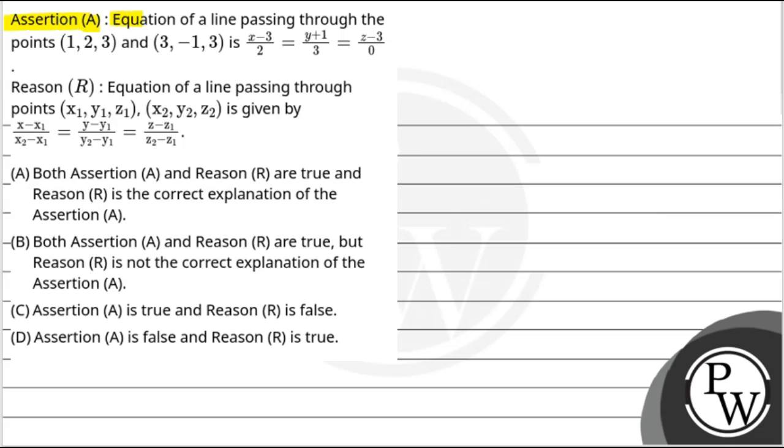Assertion A: The equation of a line passing through the points (1,2,3) and (3,-1,3) is (x-3)/2 = (y+1)/3 = (z-3)/0.